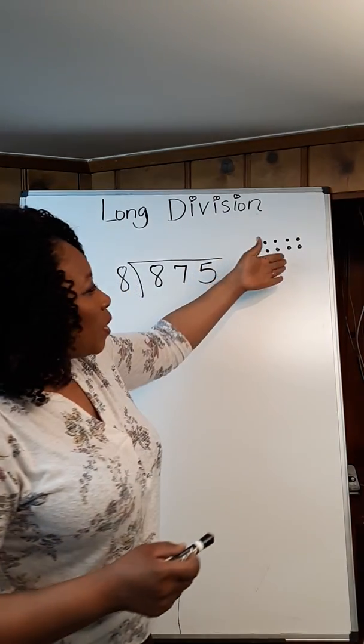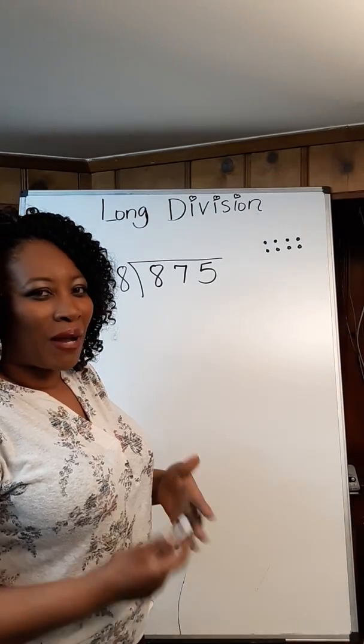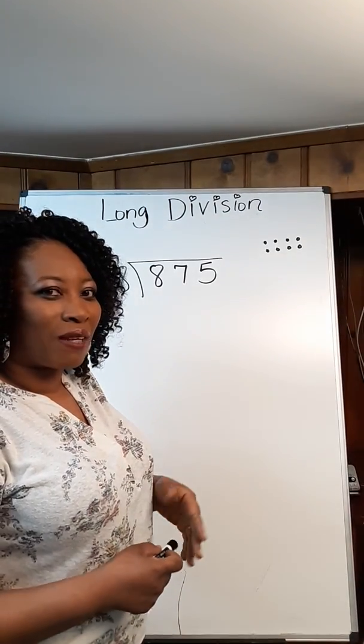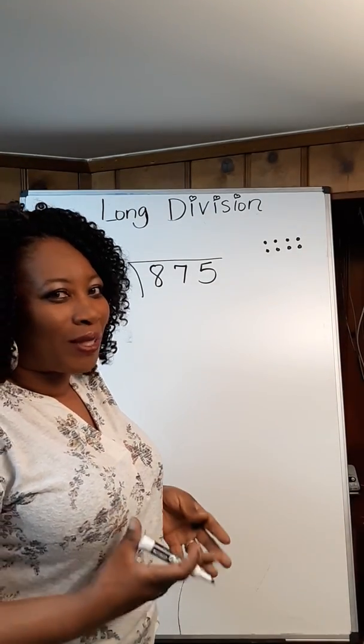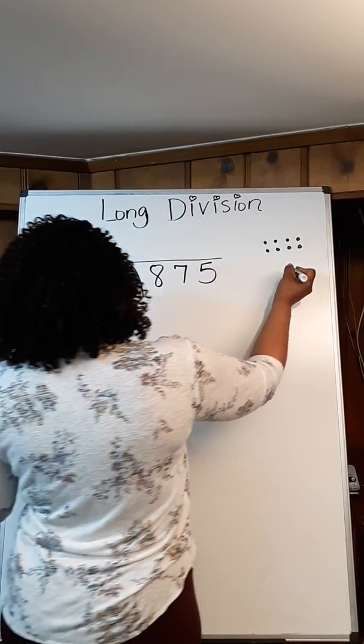Let me show you what to do. We're going to start by listing our multiples if you haven't memorized your times table. We're going to list our multiples of 8. I'm using repeated addition to create my own times table, starting with 8.